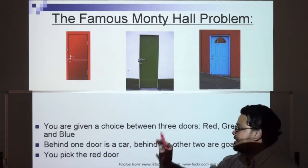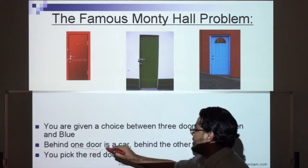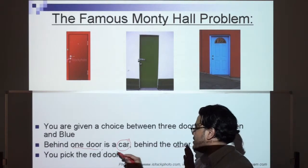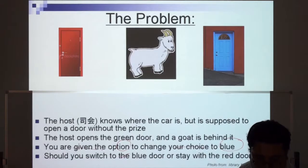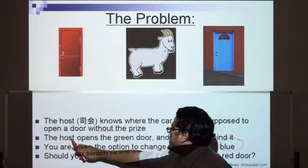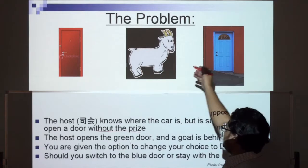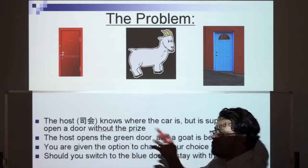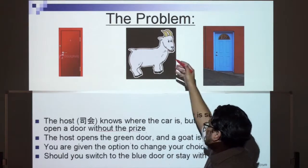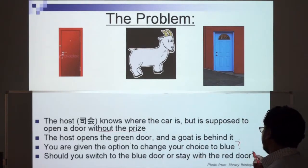The famous Monty Hall problem: you are given a choice between three doors — red, green, and blue. Behind one door is a car and behind the other two are goats. Say you pick the red door. The host knows where the car is but opens a door without the prize — the host opens the green door and the goat is behind it. The host then asks: do you want to stay with red or change to blue? Should you switch to the blue door or stay with the red door? That's the question.